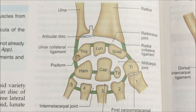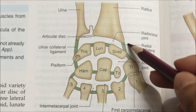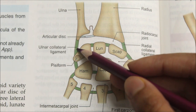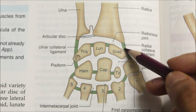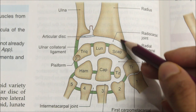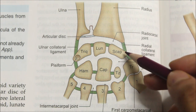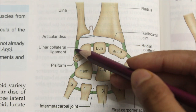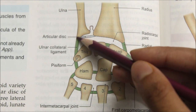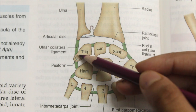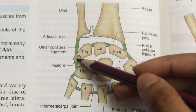Moving on to the last two ligaments, we have the radial collateral ligament and the ulnar collateral ligament. The radial collateral ligament extends from the tip of the styloid process of the radius to the lateral side of the scaphoid bone. The ulnar collateral ligament begins from the tip of the styloid process of the ulna and extends to the triquetral and pisiform bones.